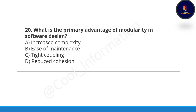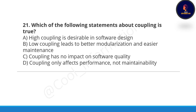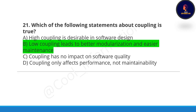Next question: what is the primary advantage of modularity in software design? Option B is correct — ease of maintenance is the primary advantage of modularity. Next question: which of the following statements about coupling is true? Option B is correct — low coupling leads to better modularization and easier maintenance.